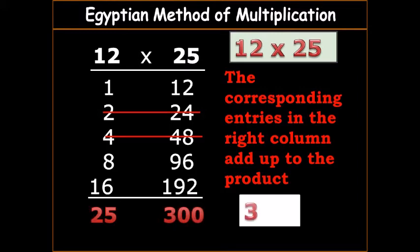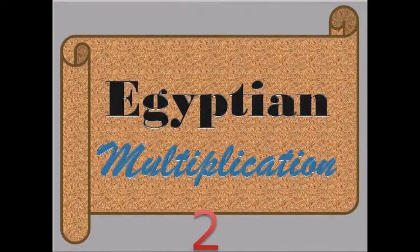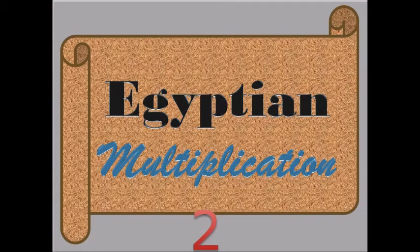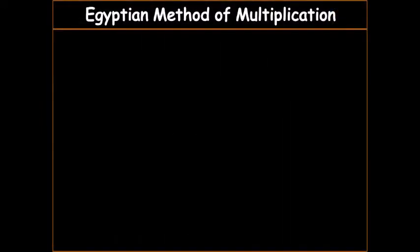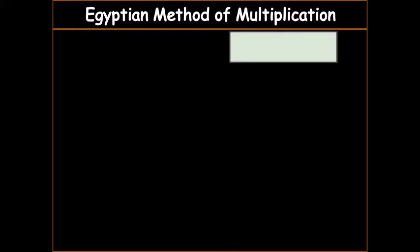So those numbers: 1 and 12, so we take the 12. 8 and 96, you take the 96. 16 and 192, you take the 192. Then you add those three up. You get 300. So the answer is 300. That was how the Egyptians were multiplying. We call it Egyptian method of multiplication.